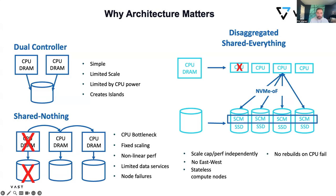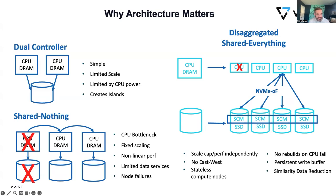Having a shared global memory pool that's persistent allows some really interesting things. First, we use this as a write buffer — when data lands on the VAST data platform, it all lands in storage class memory. That allows us to use really low-cost, low-endurance SSDs on the back end, because we're landing everything in this buffer which has great performance and great endurance. Then we de-stage in a very specific and careful way, maximizing the lifespan of those low-cost SSDs.